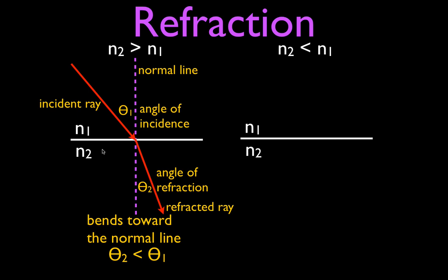Now the other case — you might guess it's the opposite, because you can either go one way or the other. We draw our ray striking the surface with N1 and N2 again, but this time N2 is less than N1, so the index of refraction of the lower material is less than that of the upper material. If the light ray were to go straight across again, it would do this — but it doesn't.